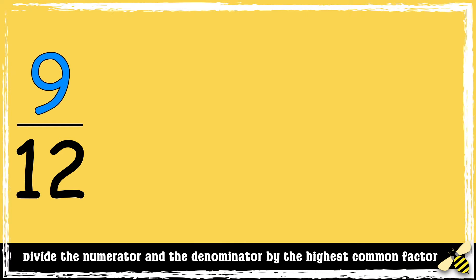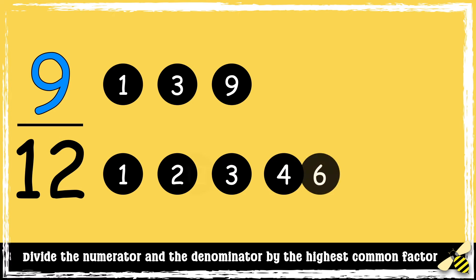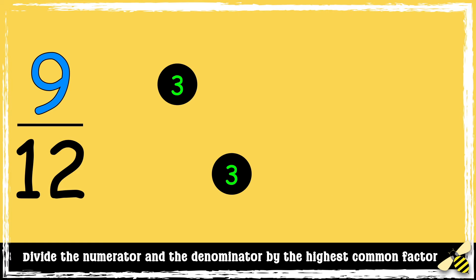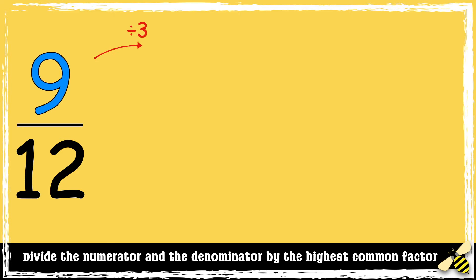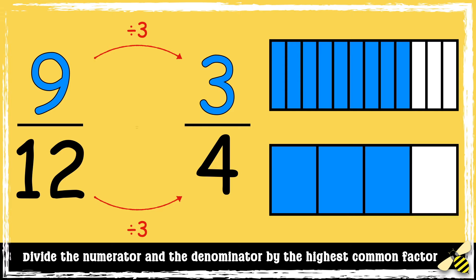So first, we need to find the highest common factor. Here are the factors of 9 and the factors of 12. The highest common factor is 3, so now we can divide the numerator and the denominator by 3. 9 divided by 3 is 3, and 12 divided by 3 is 4. So 9 twelfths in its simplest form is 3 quarters.